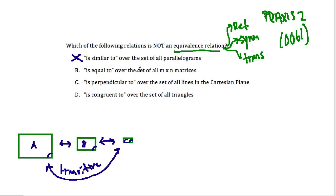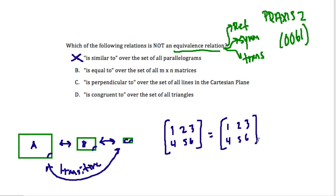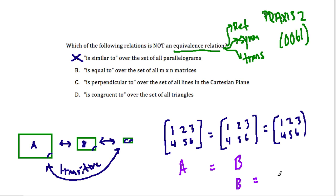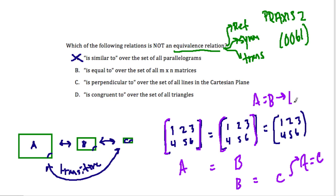Next we have 'is equal to' over the set of all M by N matrices. If our first matrix A equals our second matrix B, and B equals matrix C, then A must also equal C — that's the transitive property. Each matrix equals itself — that's the reflexive property. And since we're dealing with equality, if A equals B, then B equals A. So 'is equal to' is, of course, an equivalence relation.